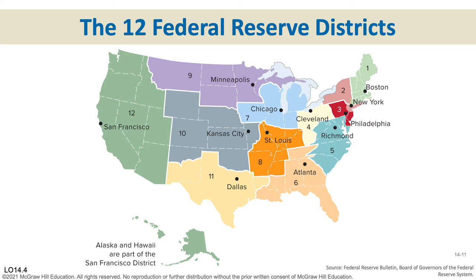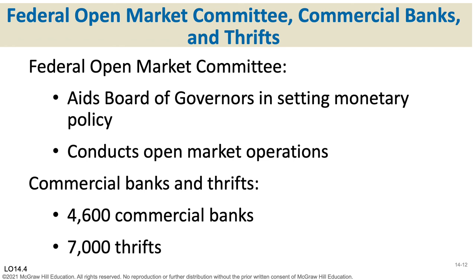Most of the Federal Reserve Banks are on the East Coast because that's where everybody lived in 1913, and it's never been redistricted. Instead, some branches of each district bank have been added. You can see that the San Francisco one covers a large area, so there are some branch banks set up to help serve that particular district.